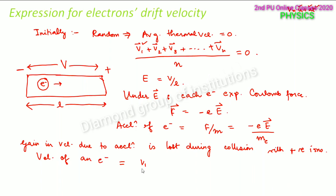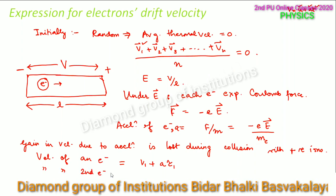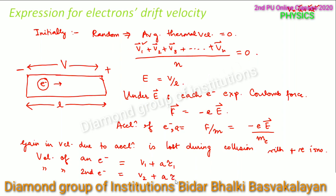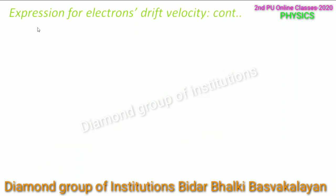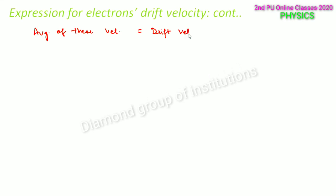The final velocity of the first electron will be equal to its initial thermal velocity v1 plus acceleration a into time tau1. Similarly the velocity of the second electron will be v2 plus a·tau2, and so on for all other electrons. The average of these velocities will be the drift velocity, because drift velocity is nothing but the average of the velocity gained by each electron.